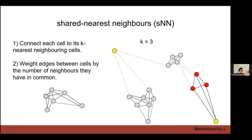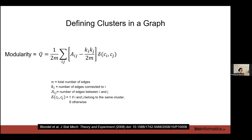Now we have a graph and need to define clusters in it. The method we use is called Louvain, or Leiden which is a variation of Louvain, and it's based on the modularity score Q. Sigma here for ci and cj is one if two cells are in the same cluster, or zero if they are not. We sum this score across every pair of cells in the same cluster; cells in different clusters get a score of zero.